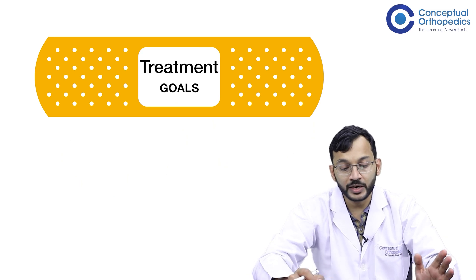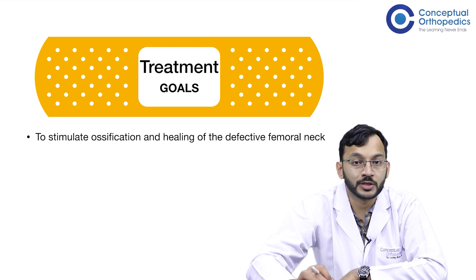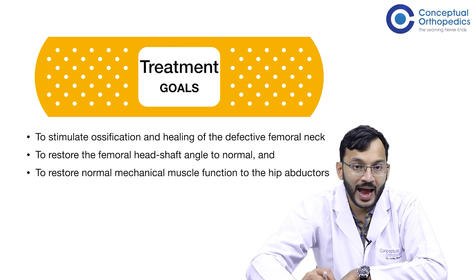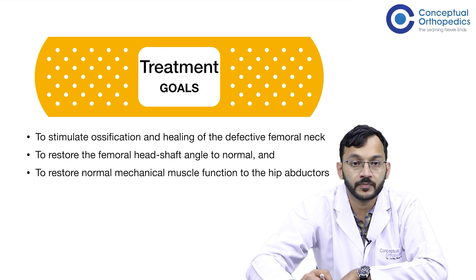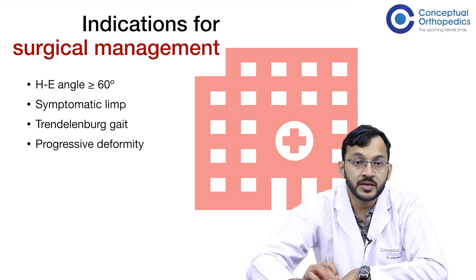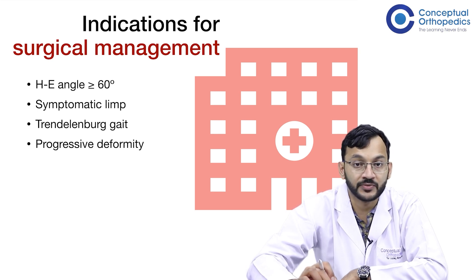The goals of treatment for congenital coxa vera are to stimulate ossification and healing of the defective femoral neck, to restore the femoral head shaft angle to normal, and to restore normal mechanical function to the hip abductors. Treatment is indicated for patients with a Hilgenreiner epiphyseal angle of more than 60 degrees, a symptomatic limb, a Trendelenburg gait, or progressive deformities.